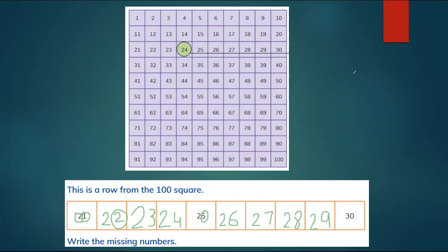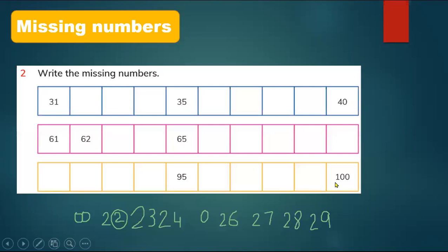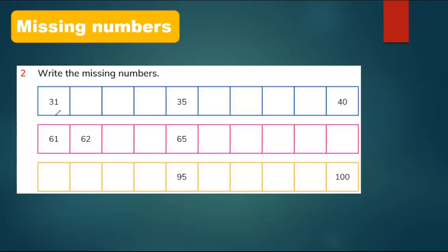Here we have more examples. Here is 31 — you have to find out the missing number. The ones will change.